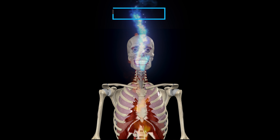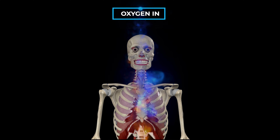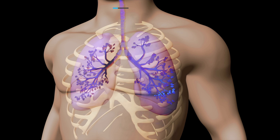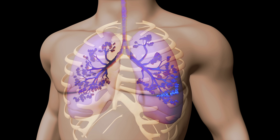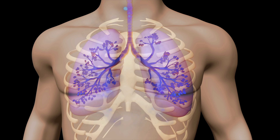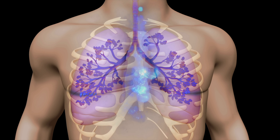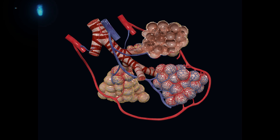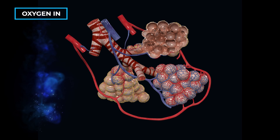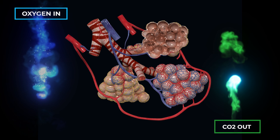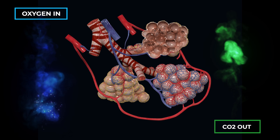The upper respiratory tract warms and humidifies atmospheric air as it enters the airways. The negative pressure generated by the respiratory muscles pulls air into the lower airways and the alveoli, where gas exchange occurs. The alveolar capillary membrane lines the respiratory bronchioles, providing a diffusion pathway for oxygen and carbon dioxide between inspired air and blood.